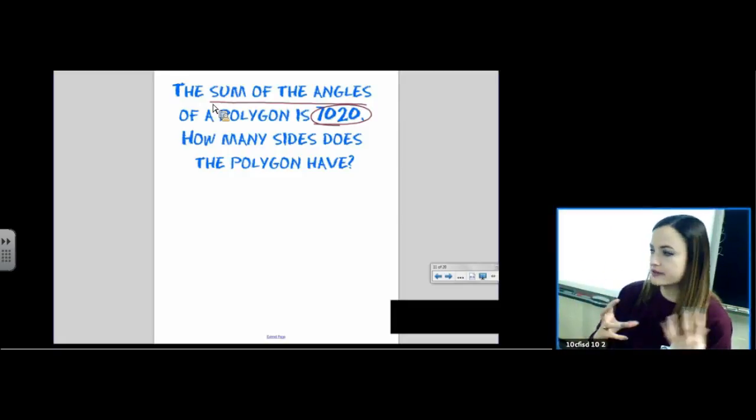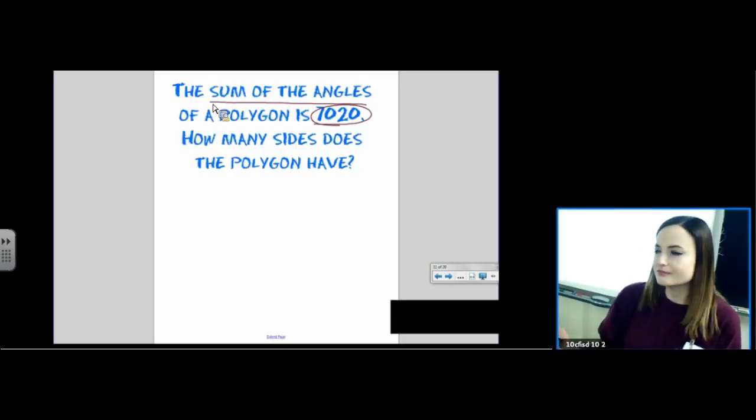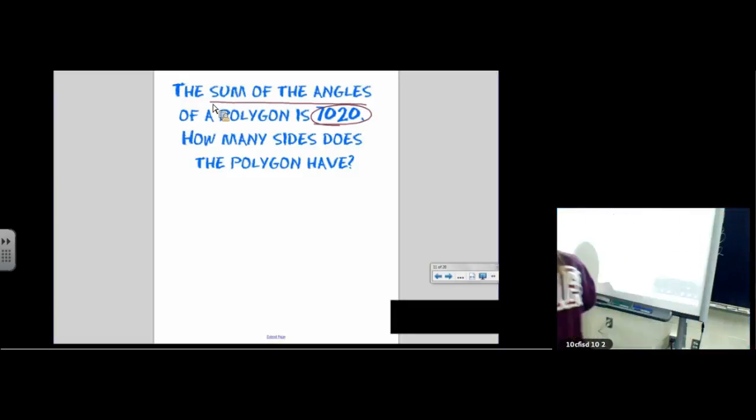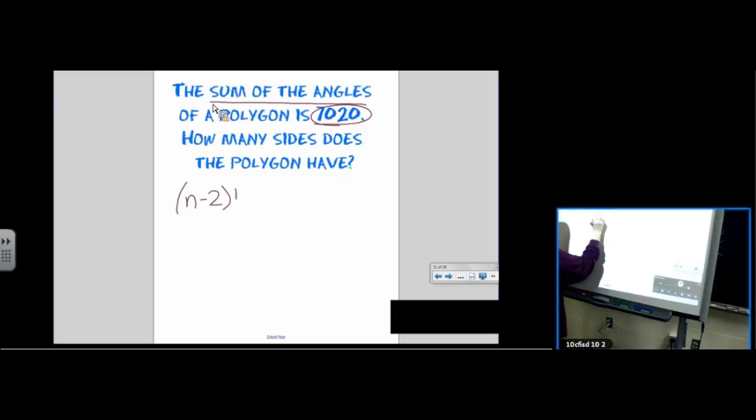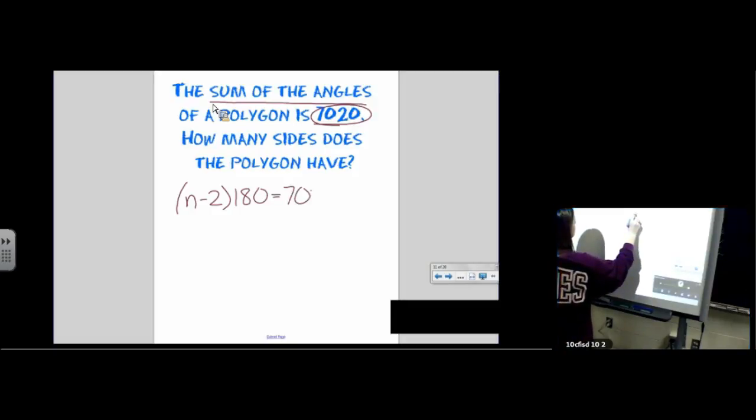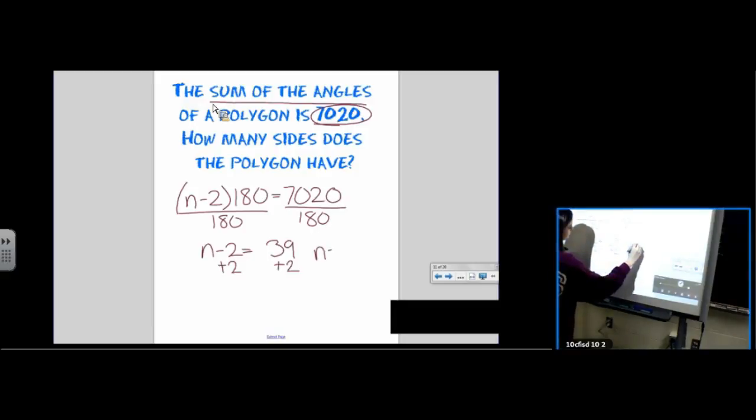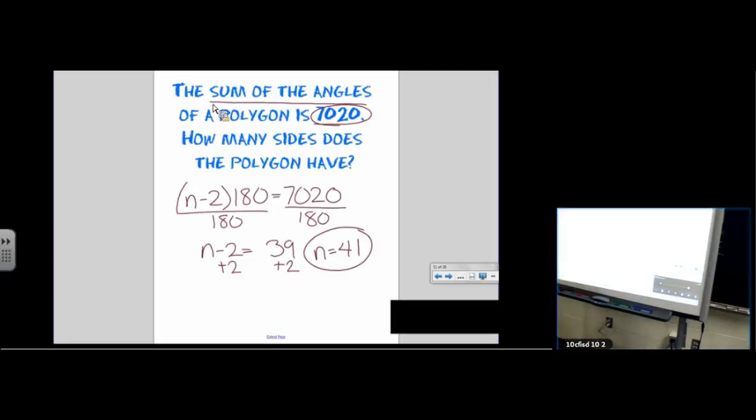If you don't know how to start it, look at your formulas. Your formulas are your best friends in this unit. Memorize them, because there aren't that many. So it tells us that the sum of the interior angles is 7,020. The formula is n minus 2 times 180. We've done that a lot. And it tells us how much that equals, 7,020. It's just completing your algebra, solving for n. Divide by 180, divide by 180. n minus 2 equals 39. To get n by itself, the opposite of subtracting is adding plus 2, plus 2. n equals 41.